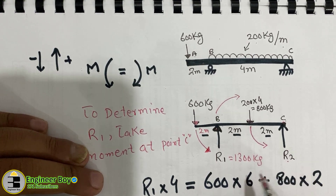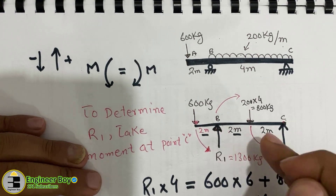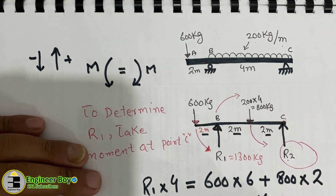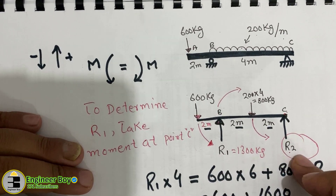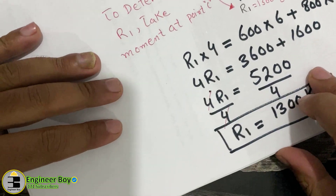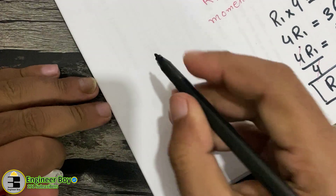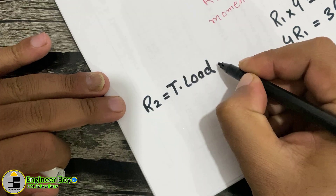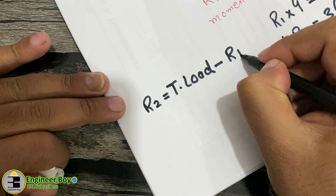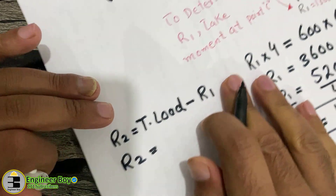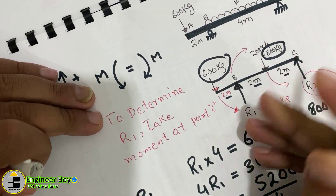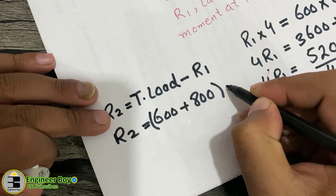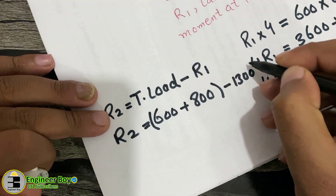Support R1 carries 1300 kg. Now for R2: the total load on the beam is 600 + 800 = 1400 kg. Since R1 already supports 1300 kg, R2 supports the remainder. So R2 = total load − R1 = 1400 − 1300.